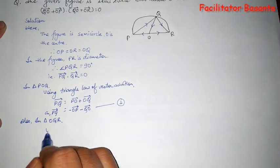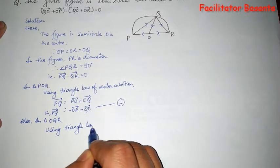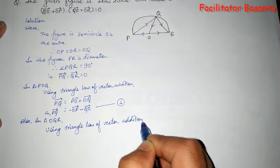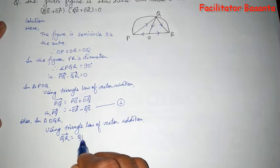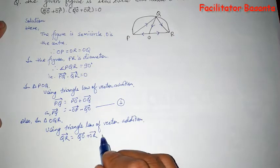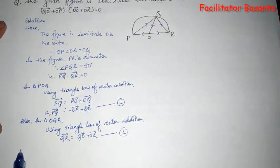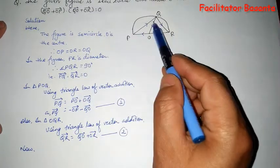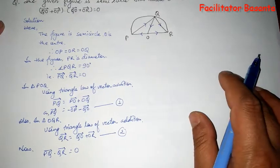We'll find QR. QR equals QO plus OR because both QO and OR exist. Let this be equation 2. Now according to the condition, angle PQR is 90 degrees, means the scalar product is zero. From the given condition, PQ dot QR equals zero.